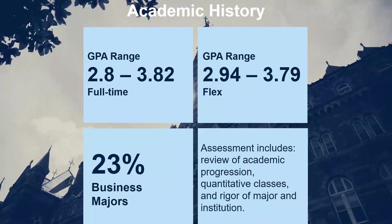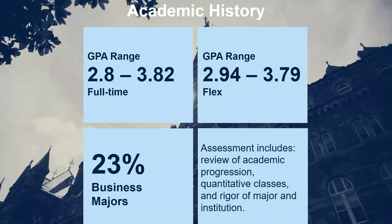We also consider how long ago you completed your coursework. The longer it's been since you've graduated, the more we look at other indicators such as work experience to demonstrate the value you can add to the classroom. Don't worry if you don't have a business background — 30% of our applicants have a business degree, meaning 70% come from different backgrounds. Some applicants choose to take additional quantitative or business classes to boost their credentials; there are great online resources like Coursera, some of which are free. If you didn't have quantitative exposure in your undergraduate, highlight it through work experience or other classes.